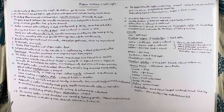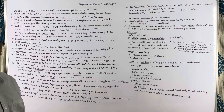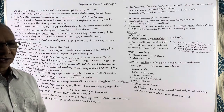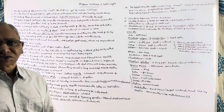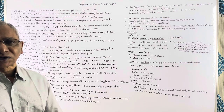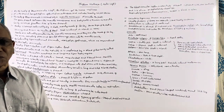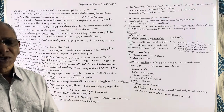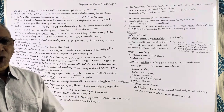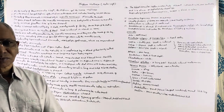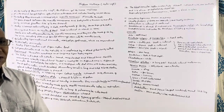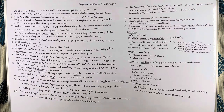Molluscans are bilaterally symmetrical animals, except for gastropod molluscs. The gastropod molluscs are asymmetrical because their larvae have undergone a process known as torsion. Because of this torsion, they have lost their bilateral symmetry, but all other molluscans are bilaterally symmetrical.